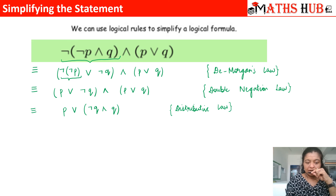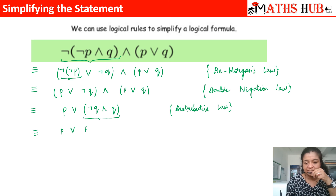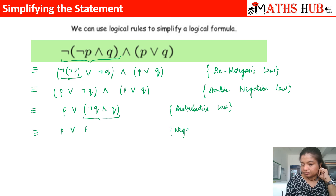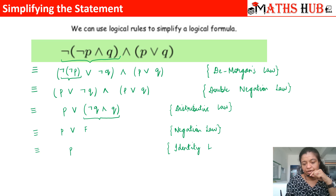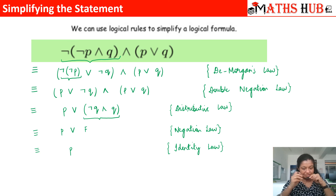Next, we apply the negation law: negation Q AND Q is always a false statement. So we get P OR F. And finally, by the identity law, P OR F is equivalent to P. So the entire compound statement was reduced to the simple statement P with the help of the laws.